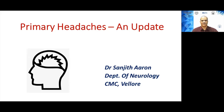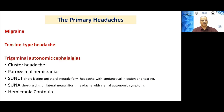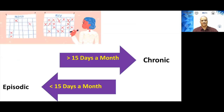Good afternoon, and let me first of all thank the Department of Medicine for inviting me for this talk on an update on primary headaches. The three main groups of primary headaches are migraine headaches, tension type headaches, and trigeminal autonomic cephalalgias. If these headaches occur for more than 15 days a month, we term them chronic; otherwise, we term them episodic headaches.